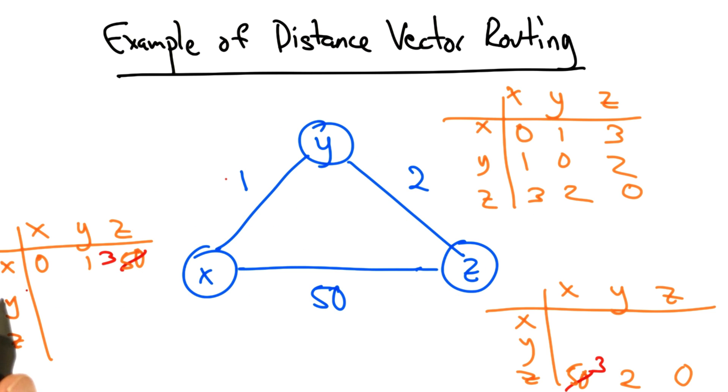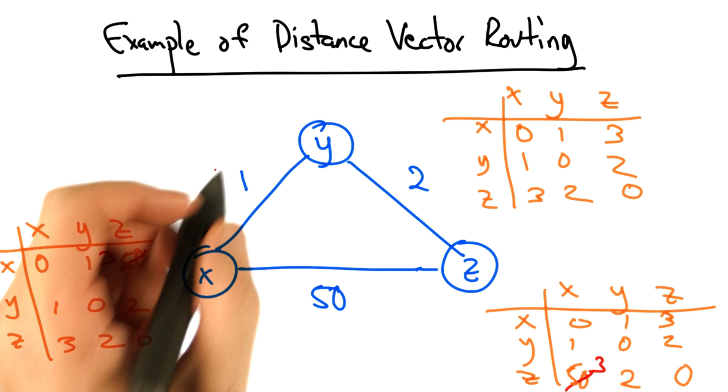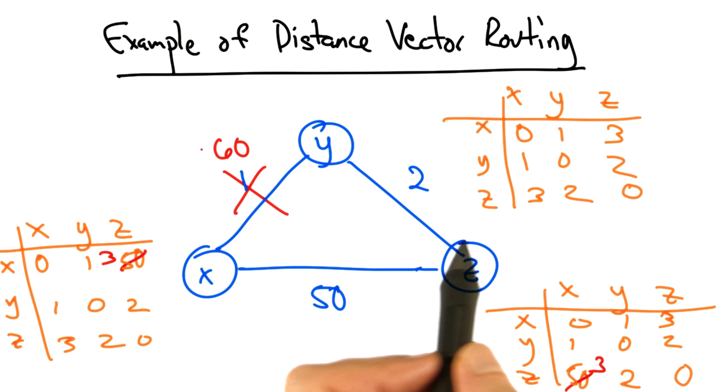Now eventually, after running the distance vector protocol, we would see the tables converge as such. Let's suppose that the cost of the link between x and y suddenly increased from 1 to 60.